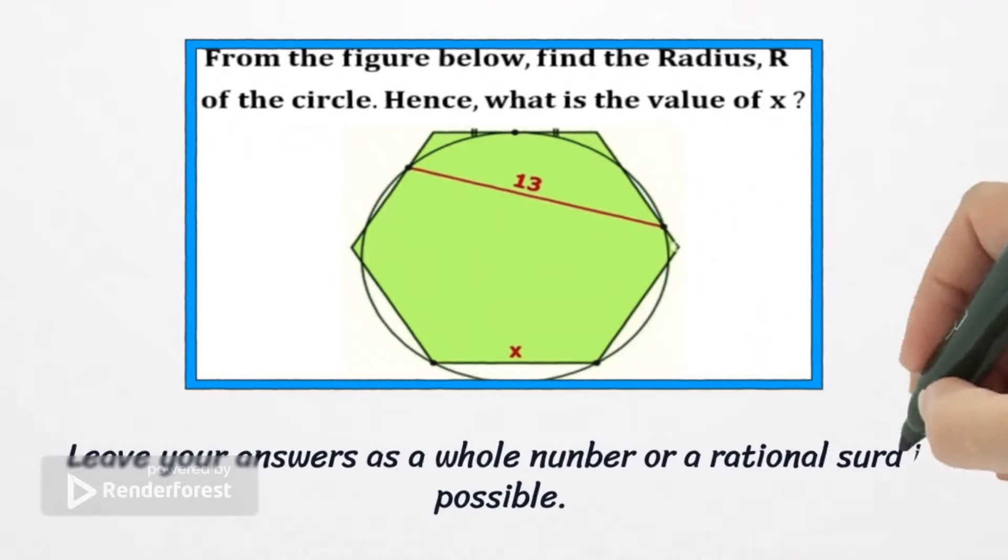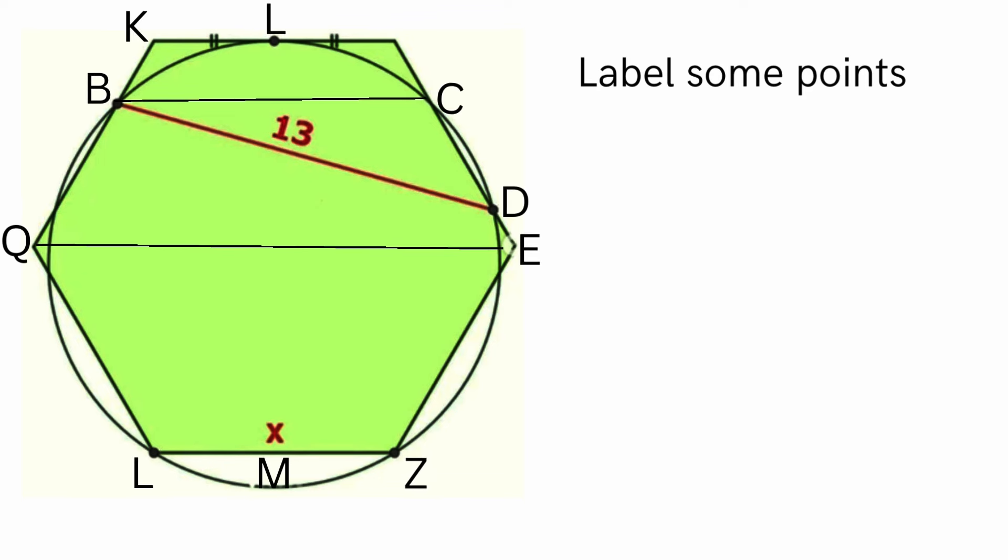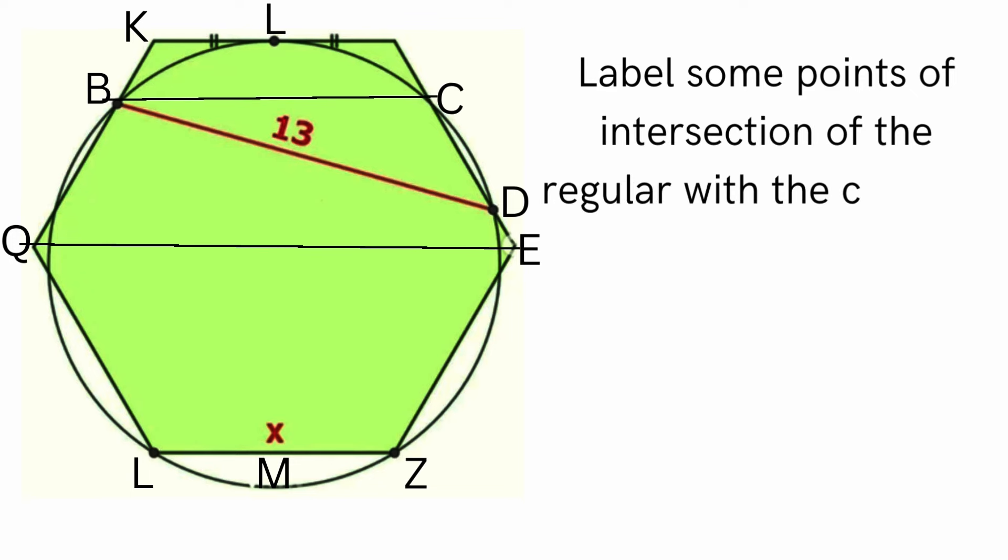Required: find the value of radius R and the length X of the regular hexagon. Label some points of intersection of the regular polygon with the circle as shown in the diagram.